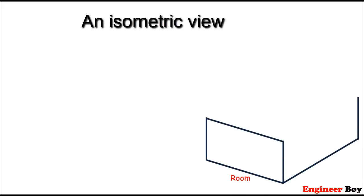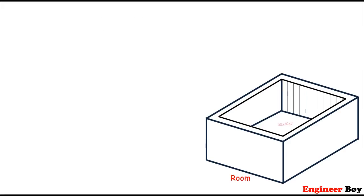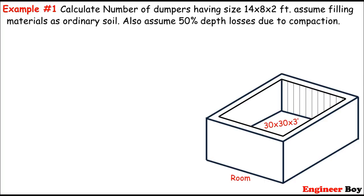Let's suppose if we have a room. This is just the isometric view of the room. This is just a sample room 30 times 30 times 3. This is just the size of the room. Now if we are asked to determine the number of dumpers or the number of trucks, you can say having size 14 times 8 times 2 feet. We are also informed to assume the filling material is ordinary soil. Also assume 50 percent depth losses due to compaction. So this is actually quite simple terms if you see in the examples.